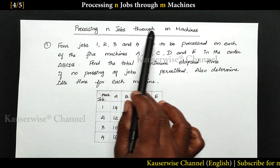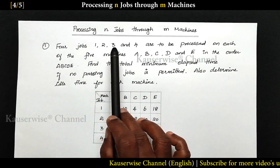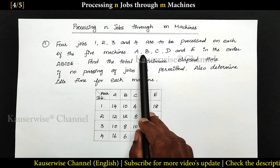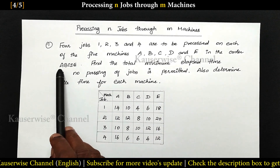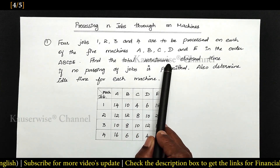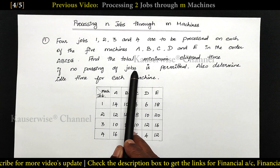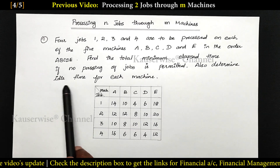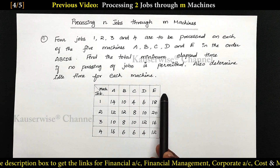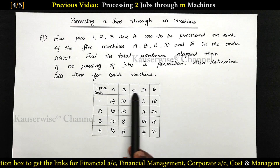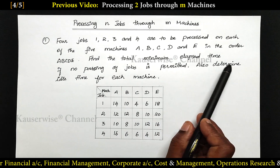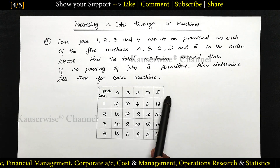Processing N jobs through M machines. Four jobs — 1, 2, 3 and 4 — are to be processed on each of the 5 machines A, B, C, D and E in the order A, B, C, D, E. Find the total minimum elapsed time if no passing of jobs is permitted. Also, determine the idle time for each machine. So here we have 4 different jobs and 5 different machines, and they are asking us to calculate minimum elapsed time and also determine idle time for each machine.